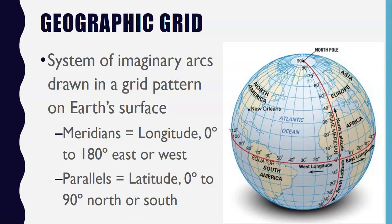Meridians are arcs that are drawn between the north and south poles. Each is numbered according to a system known as longitude, and values of longitude range from zero degrees — which is the prime meridian — to 180 degrees east or west longitude.